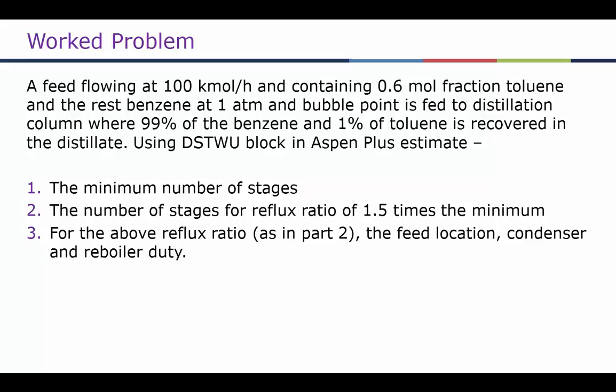In this problem we are going to separate benzene and toluene. A feed flowing at 100 kmol/hr containing 0.6 mole fraction of toluene and the rest benzene, at 1 atmosphere and bubble point, is fed to a distillation column where 99% of the benzene and 1% of toluene is recovered as the distillate. We need to estimate the minimum number of stages, the number of stages for a reflux ratio of 1.5 times the minimum, the feed location, and the condenser and reboiler duty using the DSTWU block. The key detail is that the feed is at bubble point, so vapor fraction must be set to 0.